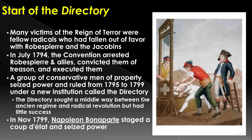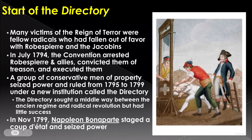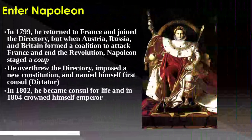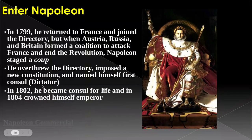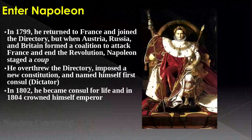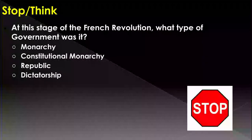Now we enter the Directory — a group of leaders that sit around and talk about how government should be ruled. They make a major mistake: they promote this up-and-coming general named Napoleon Bonaparte and give him military control. With that, he has control of troops who will follow him to the ends of the earth in war. He's going to say, I can do this better than you guys. So he takes his army, stages a coup against the Directory, and declares himself emperor — or a dictator in our terms. He actually crowned himself, which I have a picture of.